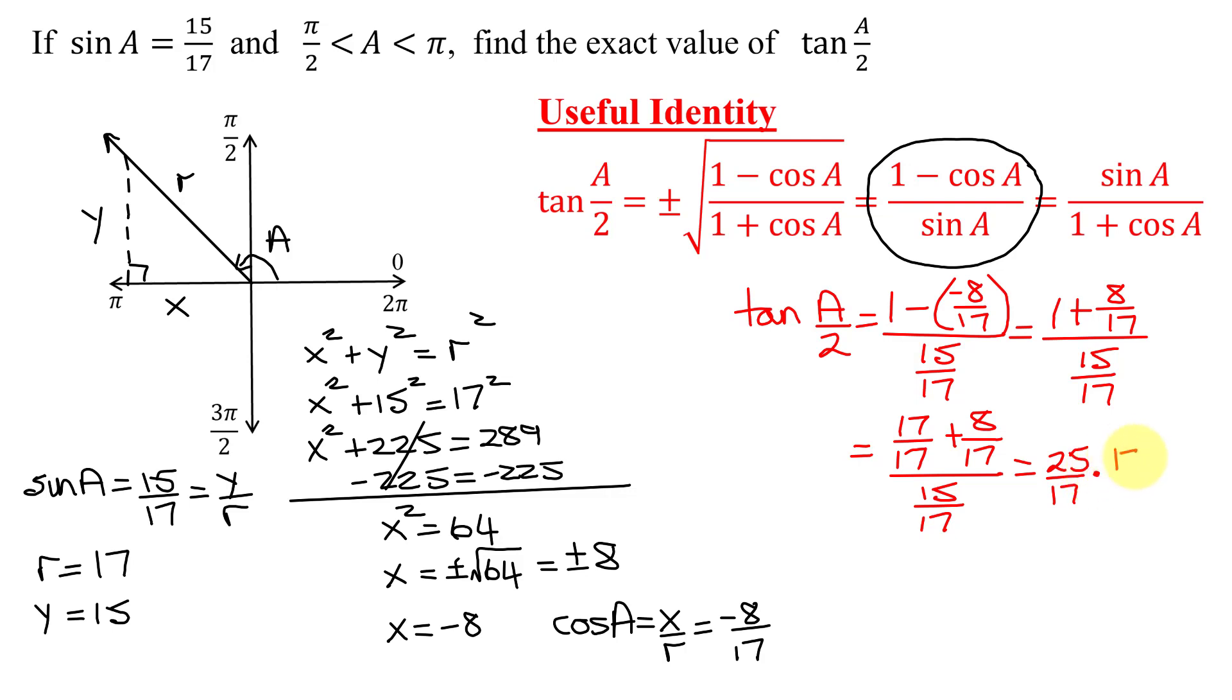So now the tangent of A over 2 equals... the 17ths reduce, and 25 and 15 both reduce by 5. 5 goes into 15 three times, 5 goes into 25 five times. So I get 5 times 1 is 5 over 1 times 3 is 3. So the tangent of A over 2 equals 5/3.